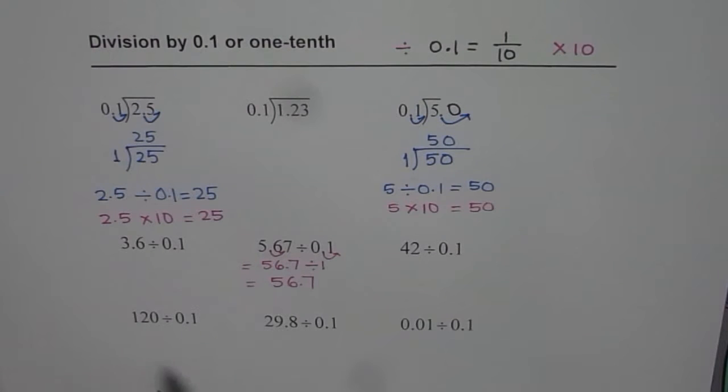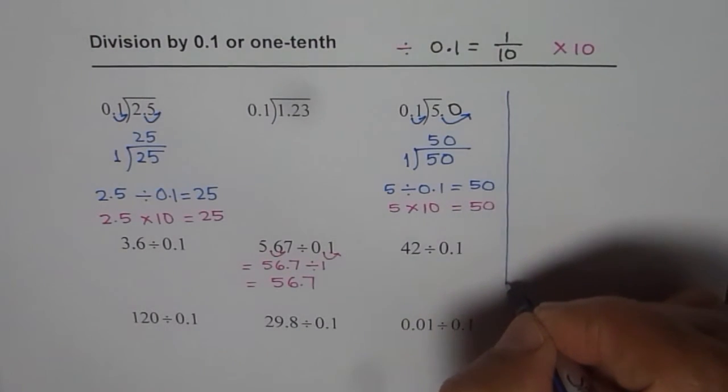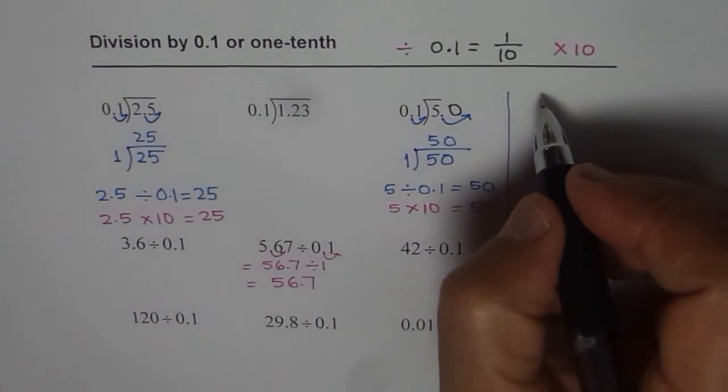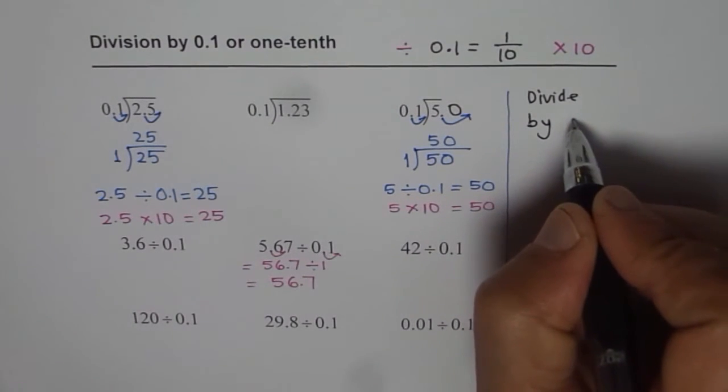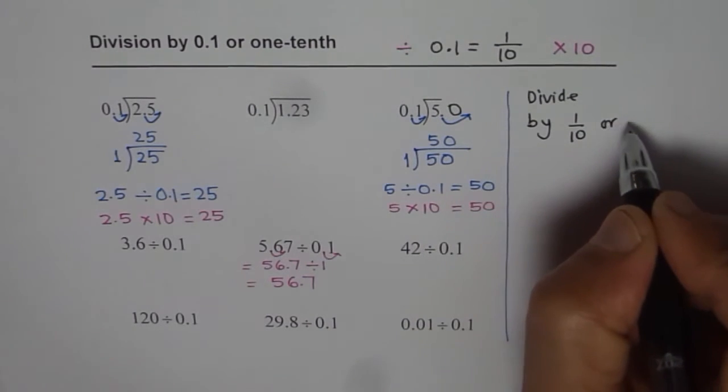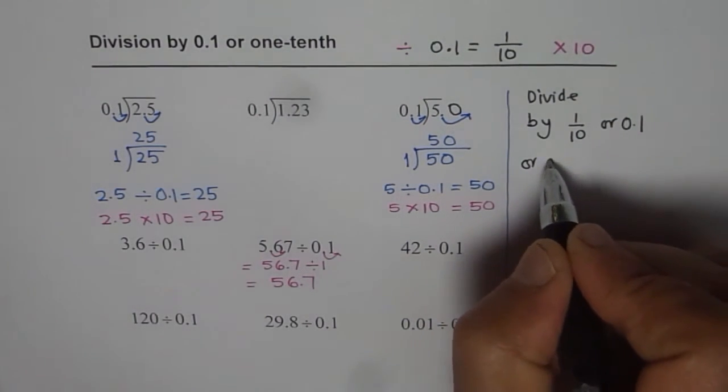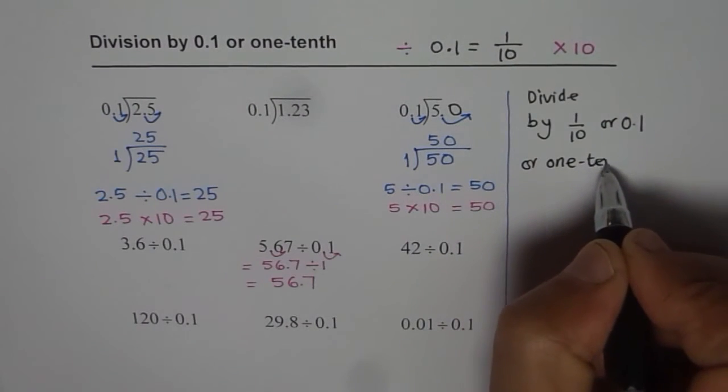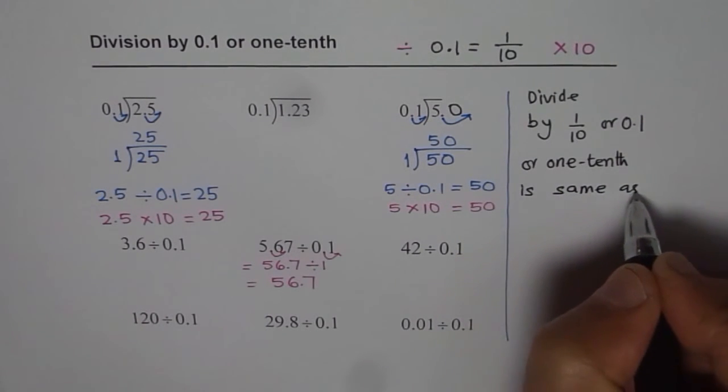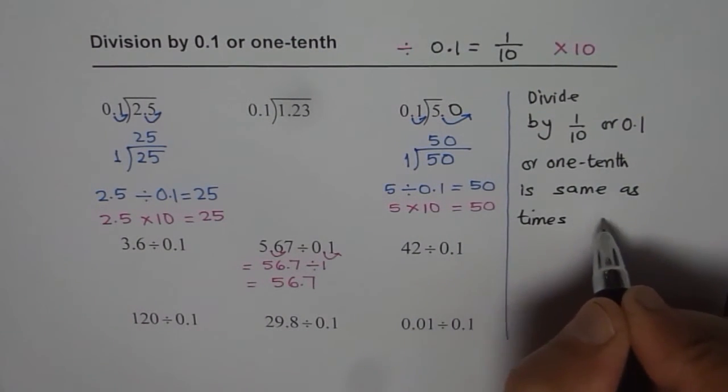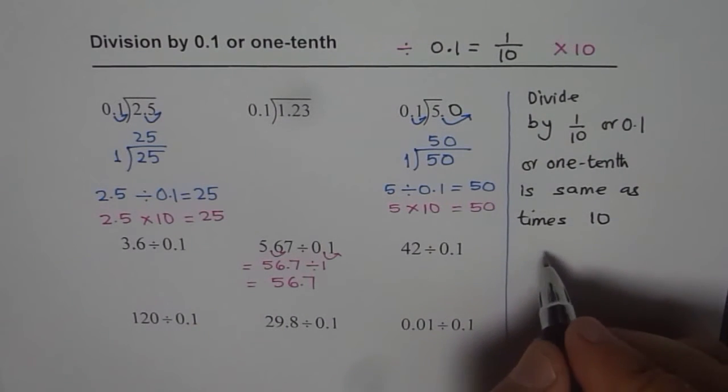So I would like you to do all the questions here and then write down what you have learned in this video. So we learned a couple of things here. One thing is divide by one-tenth - that is 1 over 10, or 0.1, or one-tenth - is same as what? Times 10. So that means what? That means that the decimal moves one position to the right. Is that okay?